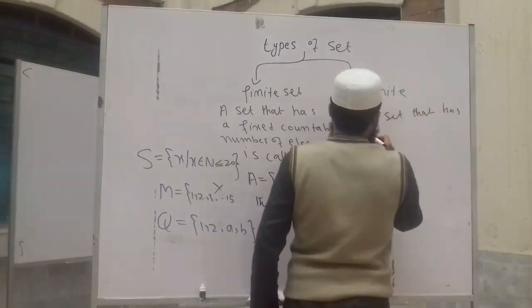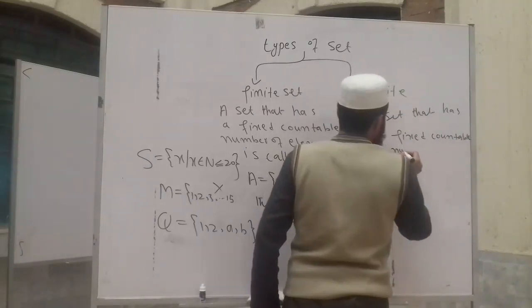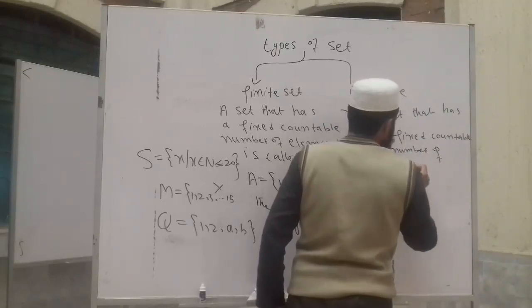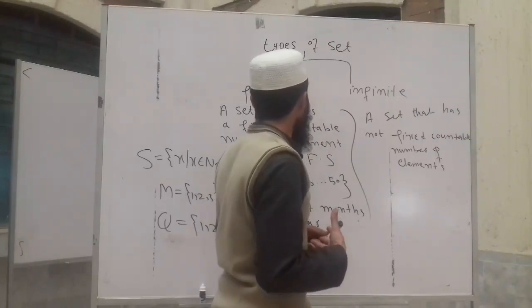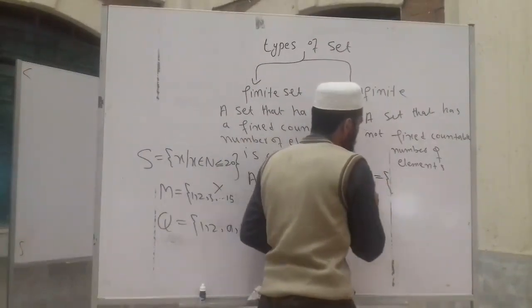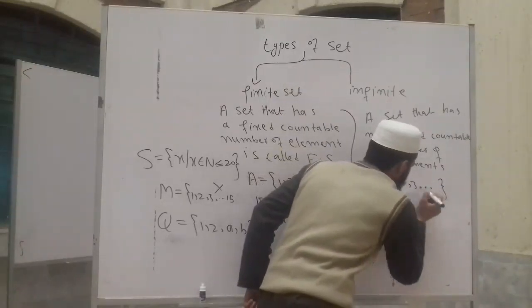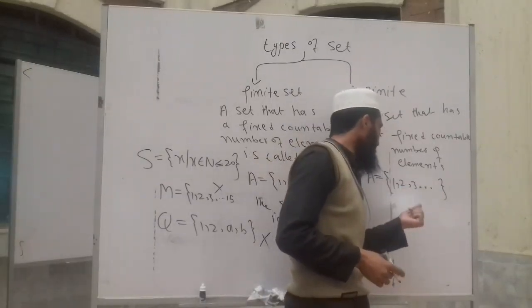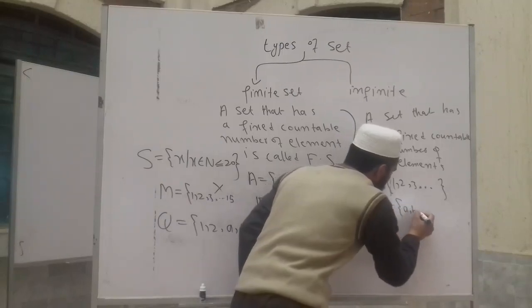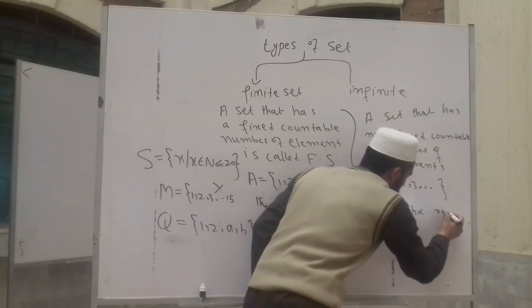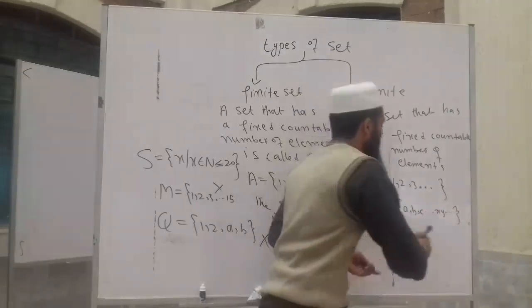An infinite set is a set that has not a fixed, countable number of elements. For example, if we use A = {1, 2, 3, ...} or A = {2, 3, 5, 6, 7, 8, 9, 10, 11, 12, 13, ...}, for Z it is infinite. For B, C, and D, it is an infinite set.